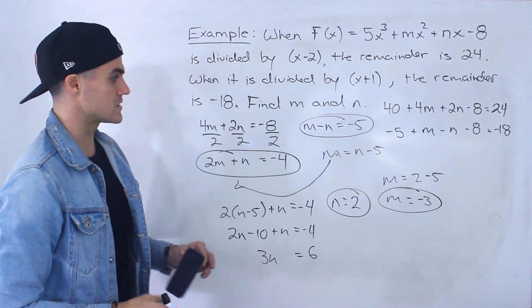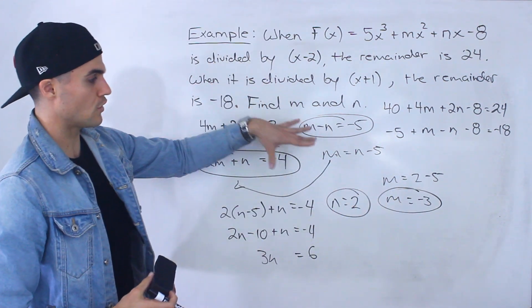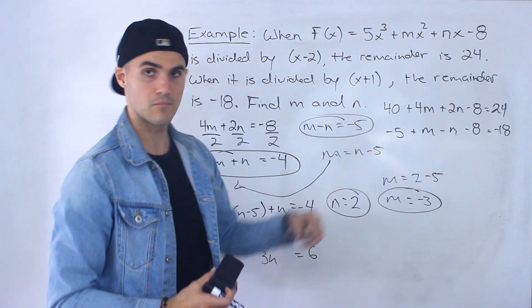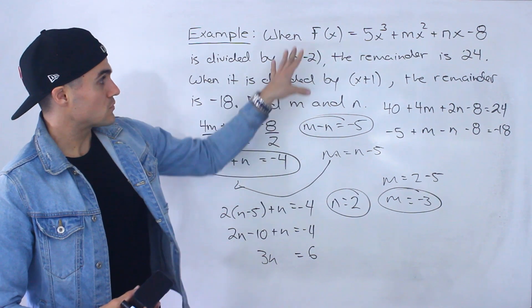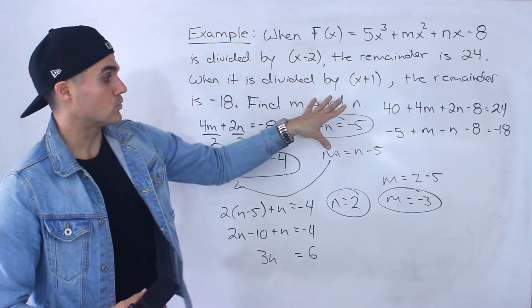Kind of went all over the place here. But anyway, out of all of that, that's the m and the n value. The m is negative 3, the n is 2.